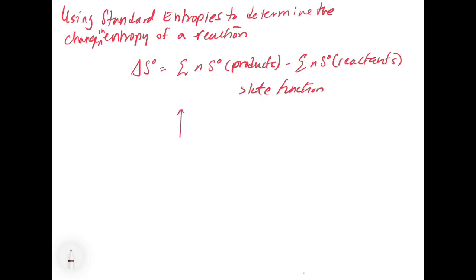If we draw these graphs like we used to in chapter 6 — those were for enthalpy — if you add up all of the reactants' entropies and the products' entropies, then basically delta S is the difference between the reactants and the products, or the change from the products to the reactants. This is sort of the same idea as Hess's law.